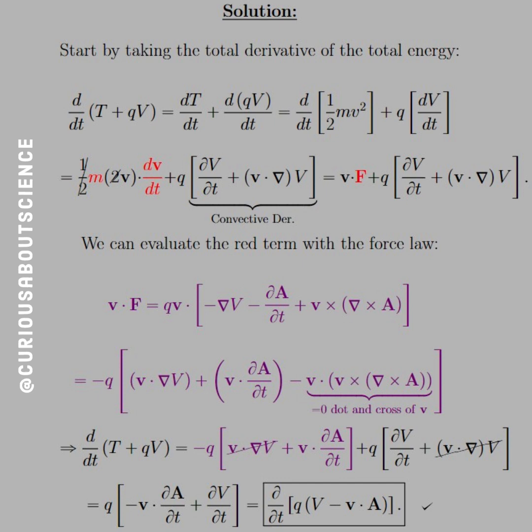Now, we're left with partial V over dt. And so, with that, we can factor out that d by dt, put the q inside the brackets with some parentheses, and rearrange to get the minus sign out the way.